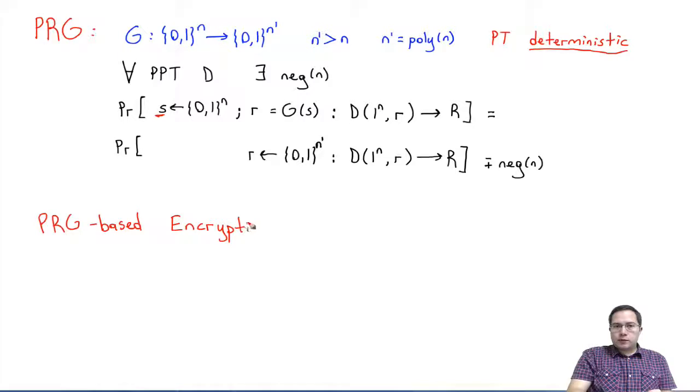And our encryption algorithm will look as follows. Remember, to define an encryption scheme, we need four things. One, key generation. So, we need a GEN algorithm that outputs a key K. And how this will work is that our algorithm will just pick a random key that is from the domain of this PRG, an n-bit random key.